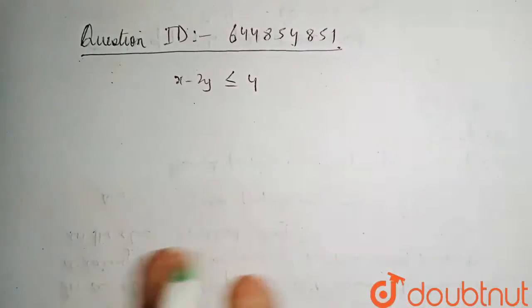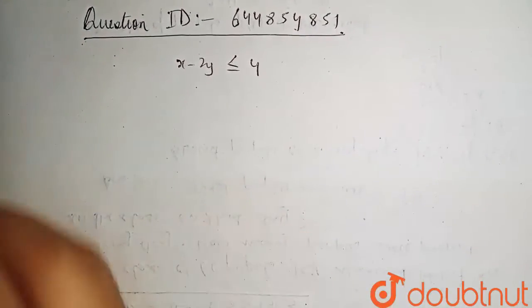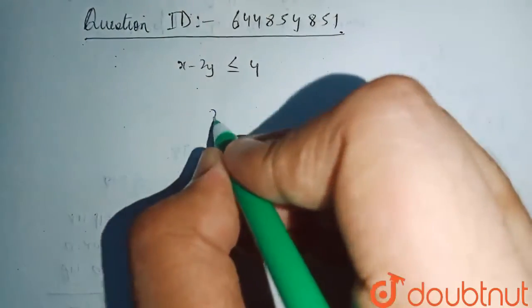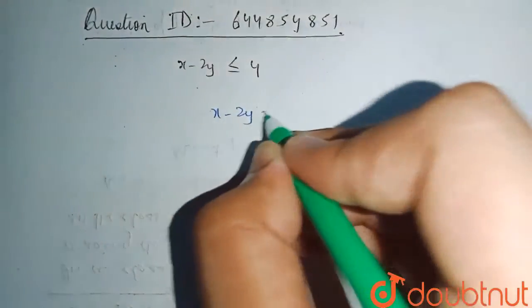So this is our question, x-2y is less than equals to 4. So in order to represent this equation as a line, we have to first make it as equation. So x-2y equals to 4.